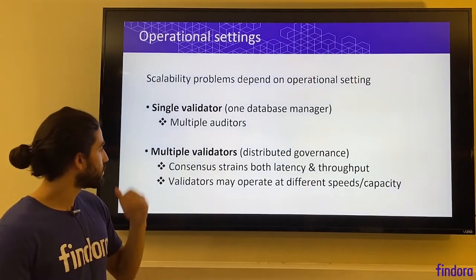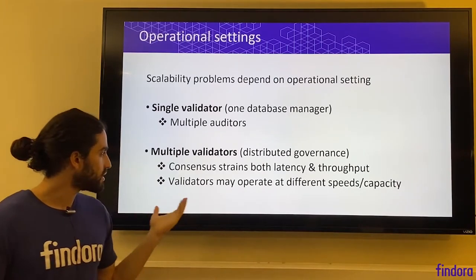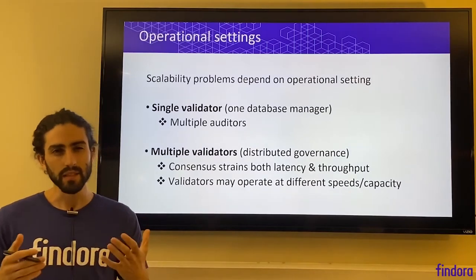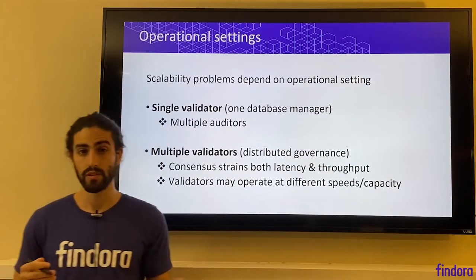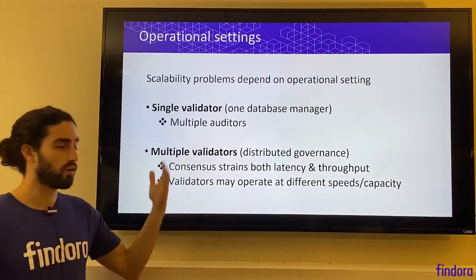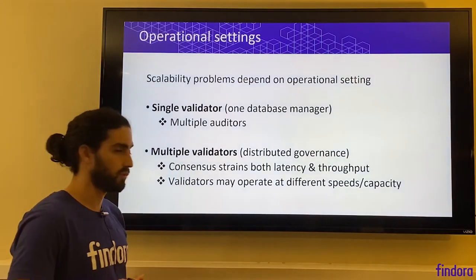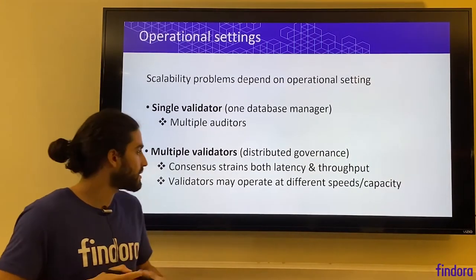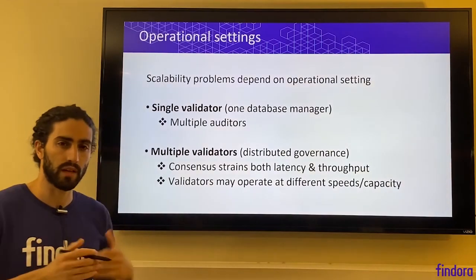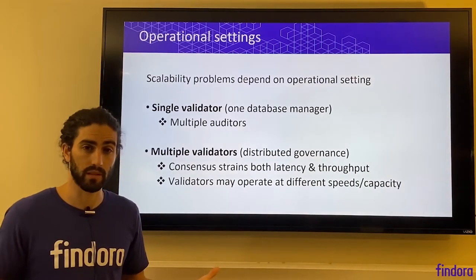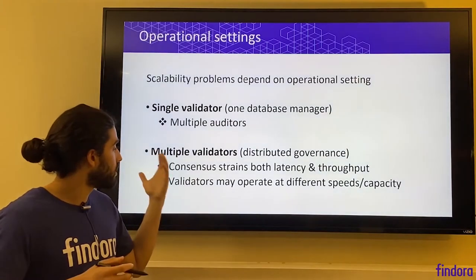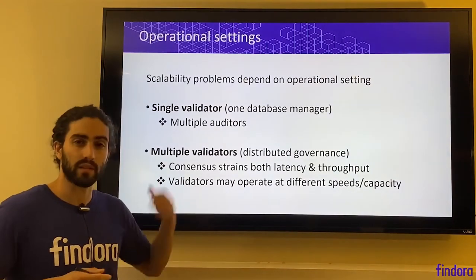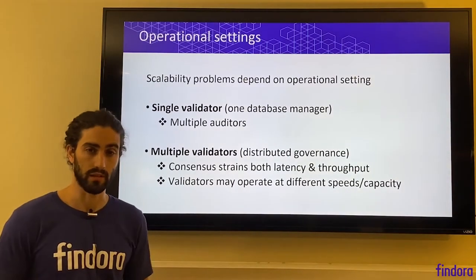Another concern for the setting of multiple validators is that different validators may operate at different speeds or capacity. There is a balance here between the need for high performance and the need for open participation, which is the whole point of having multiple validators. If we want to expand participation to be very open, we can't necessarily expect every validator to be running a high performance database. In general, the performance will scale like the weakest validator, unless we use some other tricks to get around this.